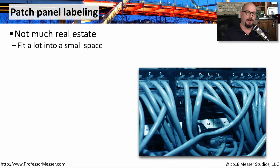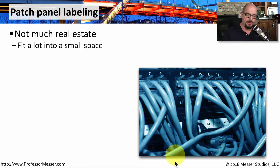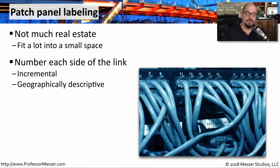The patch panels in our network closets have a number associated with a port somewhere out on the floor. We want to associate and document those port numbers on the patch panels themselves. You can see some documentation on this patch panel — from here, you know exactly what port on the floor is associated with which port on the patch panel. These numbers are usually unique, increment in a particular area, and may be geographically descriptive, with an east or west designation. In some IDFs or MDFs, there may even be a blueprint of the floor documenting exactly the numbers for every cube and every office.